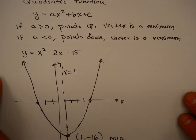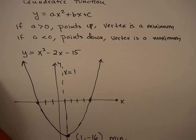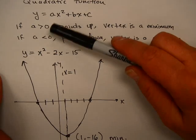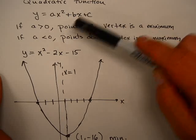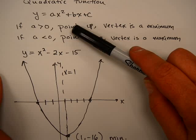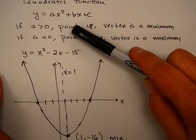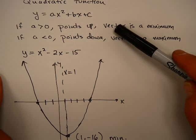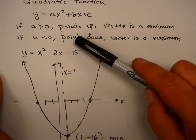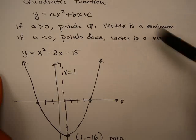All of these problems use this idea. We've talked about this before. If you have a quadratic function, y = ax² + bx + c, if the leading coefficient a is positive, then the quadratic parabola points up and the vertex is a minimum. If a is negative, then the parabola points down and the vertex is a maximum.